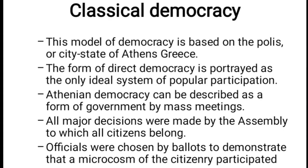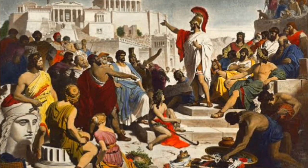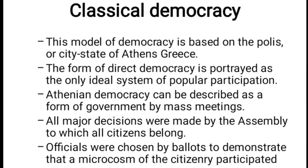The first model is classical democracy. This model of democracy is based on the polis — the city state of Athens, Greece. Because of the few number of people, they practiced direct democracy. They formed the government by mass meetings.